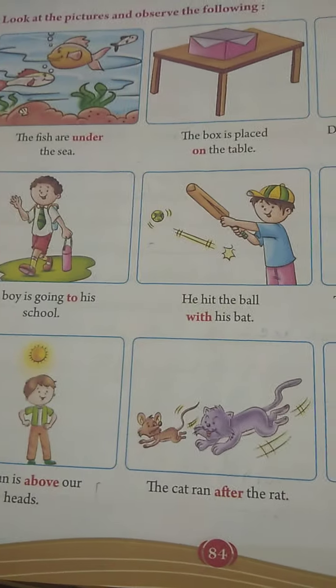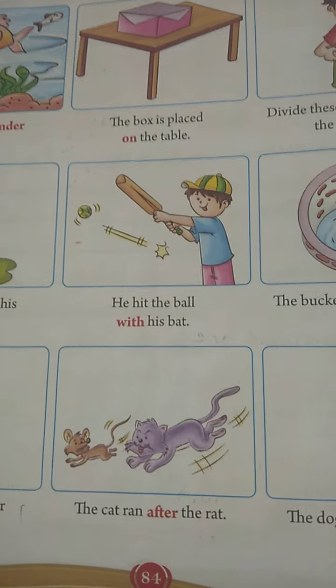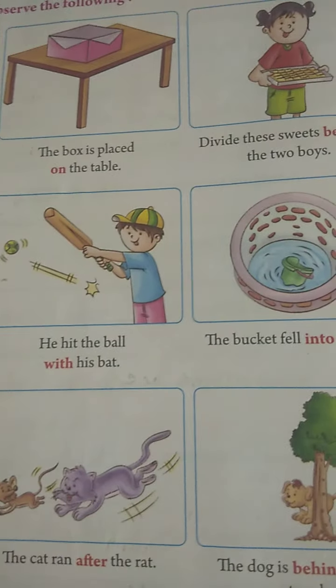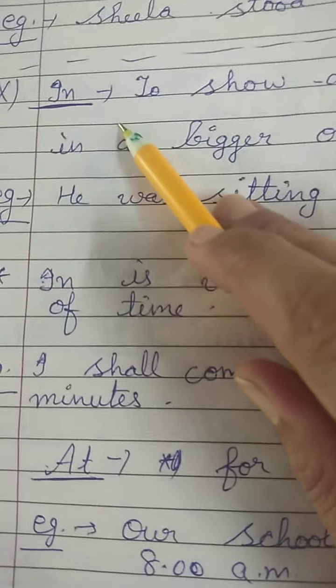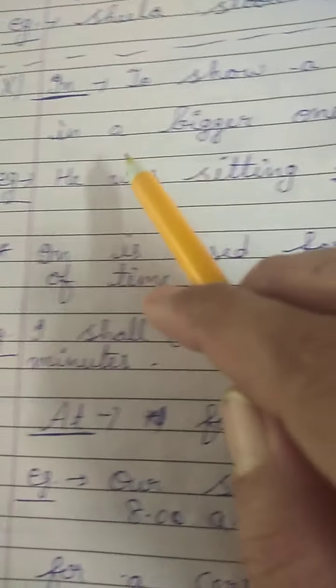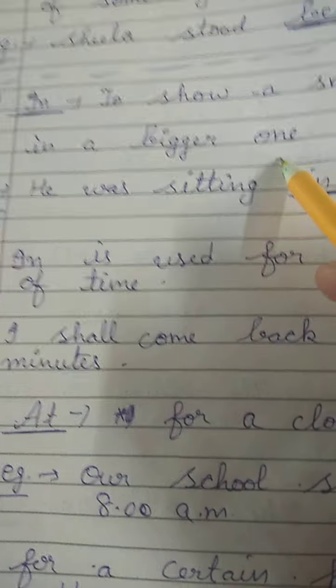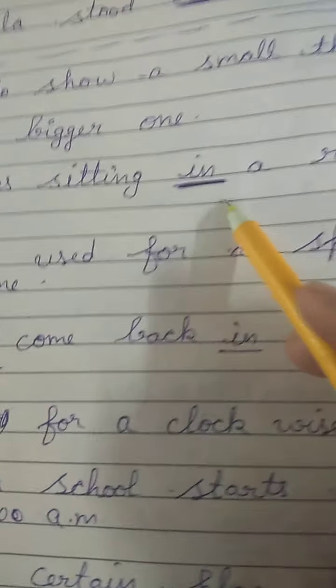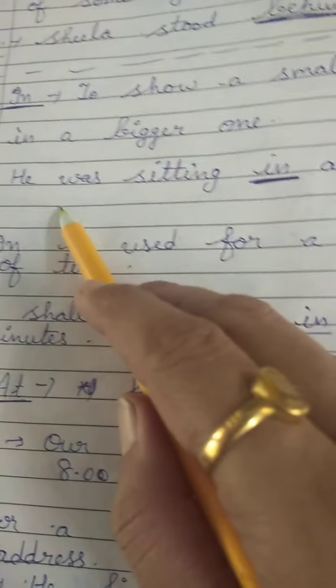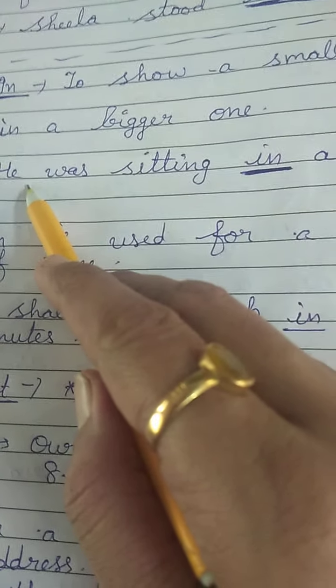These are the prepositions given in your book. Except these, we will discuss other prepositions also, because those prepositions we will use in further exercises. Next is 'in'. Where do we use 'in'? To show a small thing in a bigger one — agar ham chhoti cheez ko badi cheez mein dikhana chahte hain. For example: Ram was sitting in a room — Ram is a small person sitting in a bigger room.